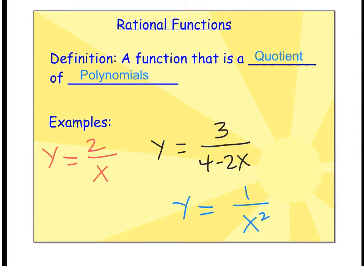Let's start with the definition right away. A rational function is a function that is a quotient of polynomials. The biggest thing to remember is you're going to have a fraction with something on the top and something on the bottom.